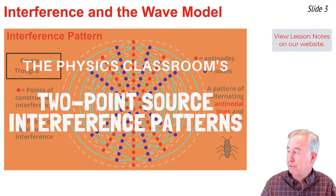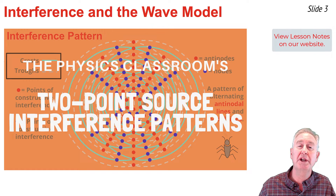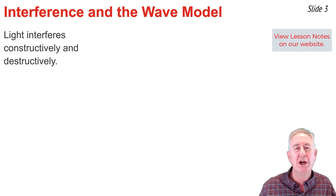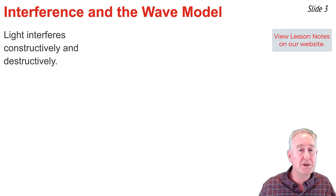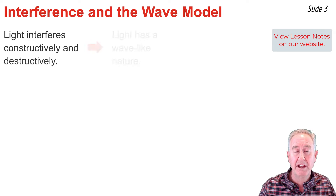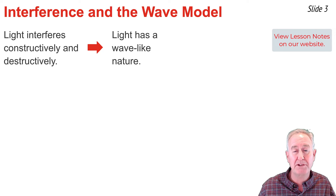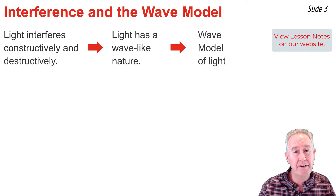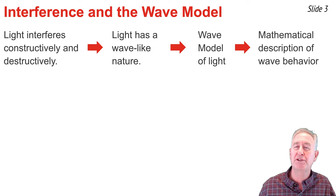In a previous video, I discussed two-point source interference patterns. Since that video is somewhat of a precursor to this one, I've left a link to it in the description section if you need to review it. One of the lines of reasoning we've used throughout this set of video tutorials on light and color is that we observe light interfering constructively and destructively. The fact that light interferes constructively and destructively gives us the belief that light behaves as a wave, and thus we've developed a wave model of light. What we've not done yet in this set of video tutorials is discuss a mathematical model for such light waves.